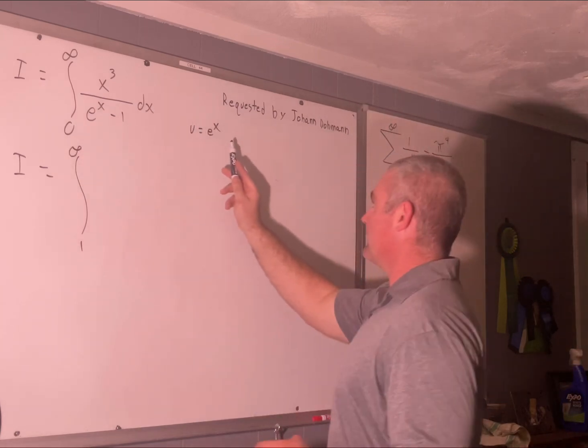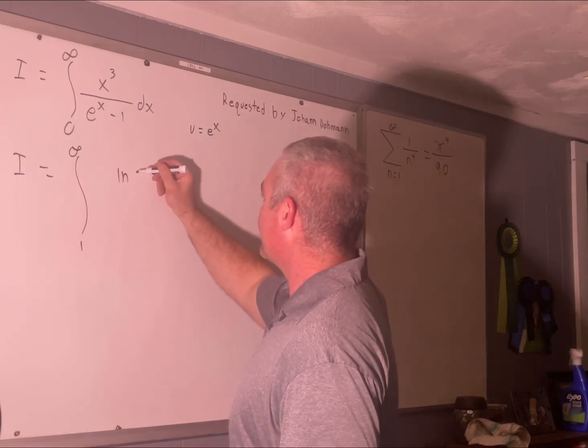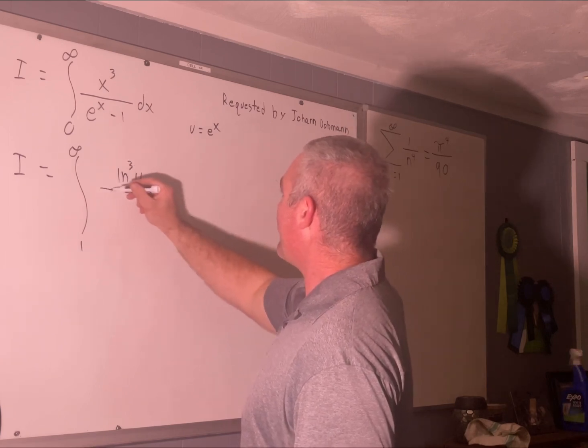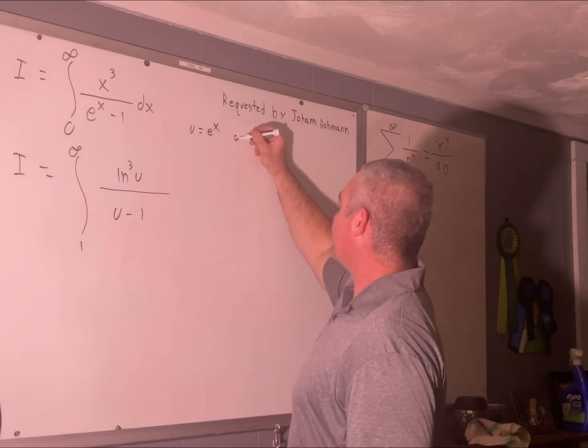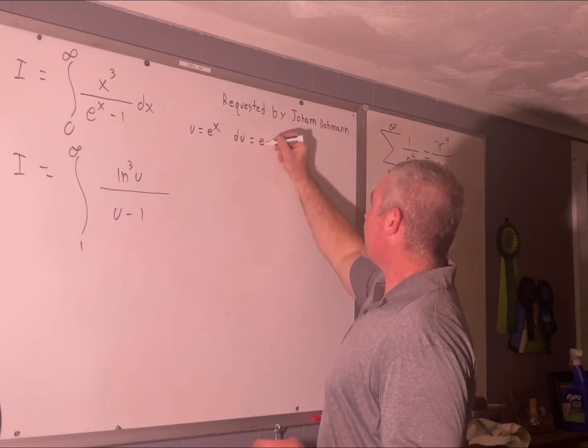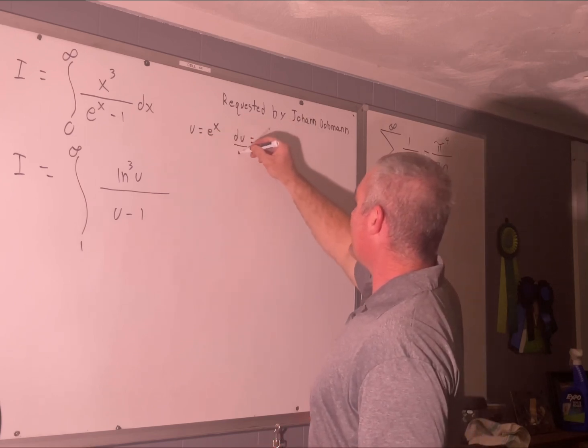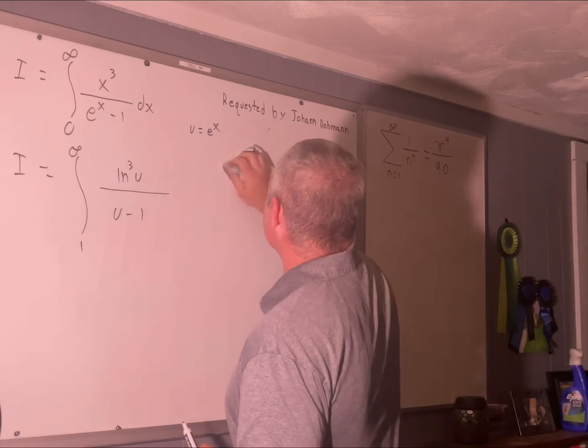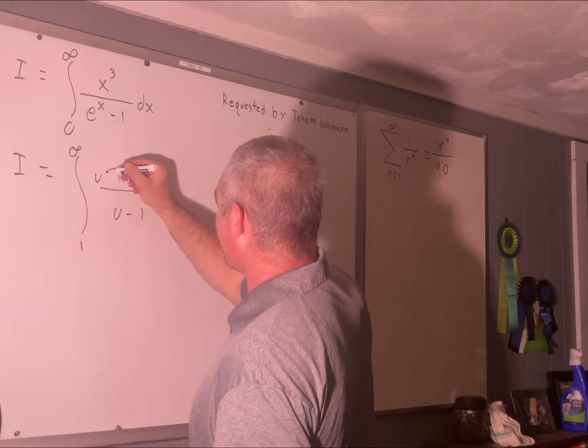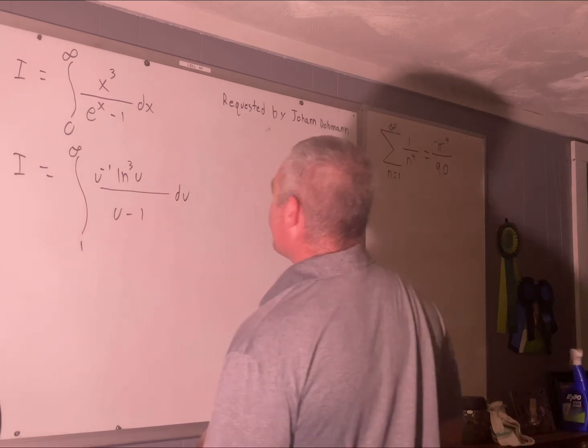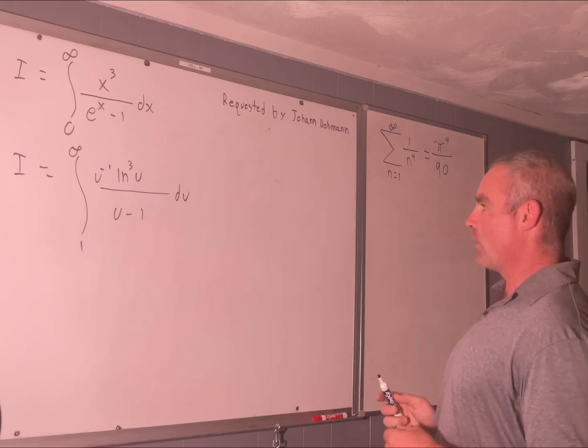Our x would become natural log u. So this is going to be natural log cubed u over u minus 1 and our dx. Well, let's see. That's going to be du is going to be equal to e to the x dx. But our e to the x is simply u. So that's du over u is equal to dx. And we'll write that 1 over u is a u to the negative 1 du.